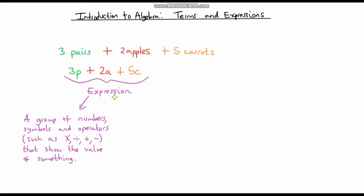Here we've got a group of numbers, symbols, and operators all grouped together, and they represent the value of something. When we add all these three things together, we get some value, and in this case, we're going to get the cost of all three items.